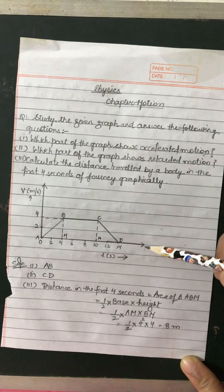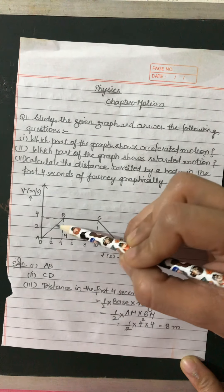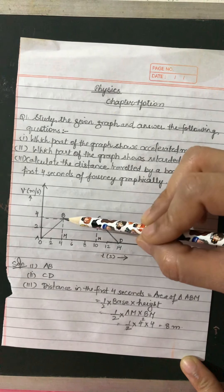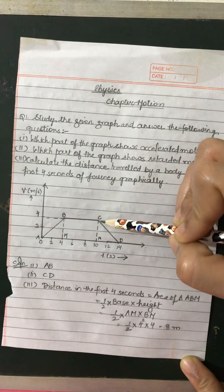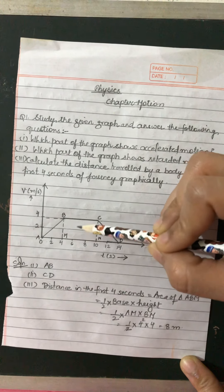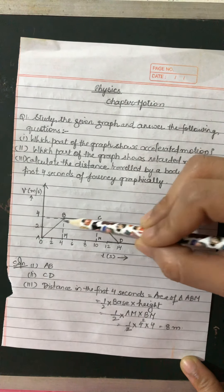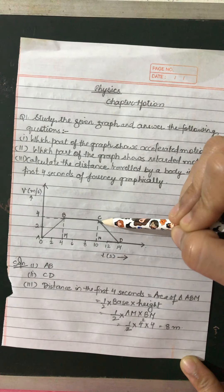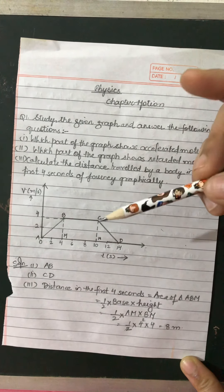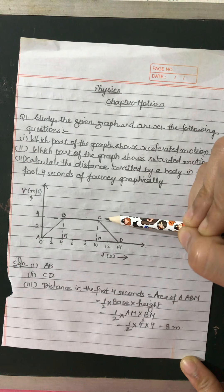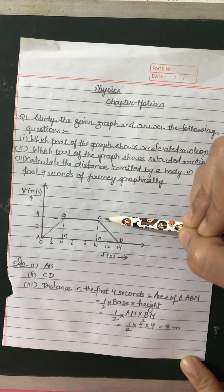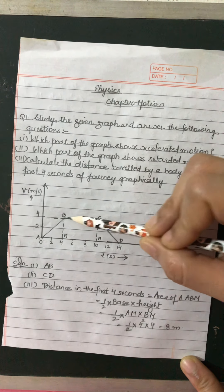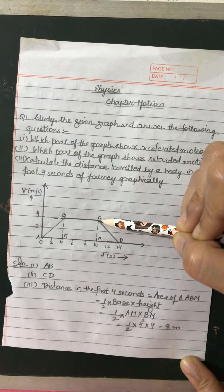In the velocity-time graph, the AB part is showing accelerated motion. If the graph is BC and it is parallel to the time axis, then at both points B and C, velocity is 4. There is no change in velocity. If there is no change in velocity, that means no acceleration is involved — zero acceleration. So BC is showing constant speed.